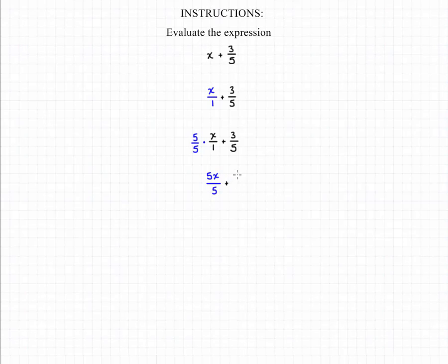We haven't changed the value, but now we've converted it into a fraction with the correct denominator, and now we can add the numerators together. So we end up with 5x plus 3 over 5, which ends up being our final answer.